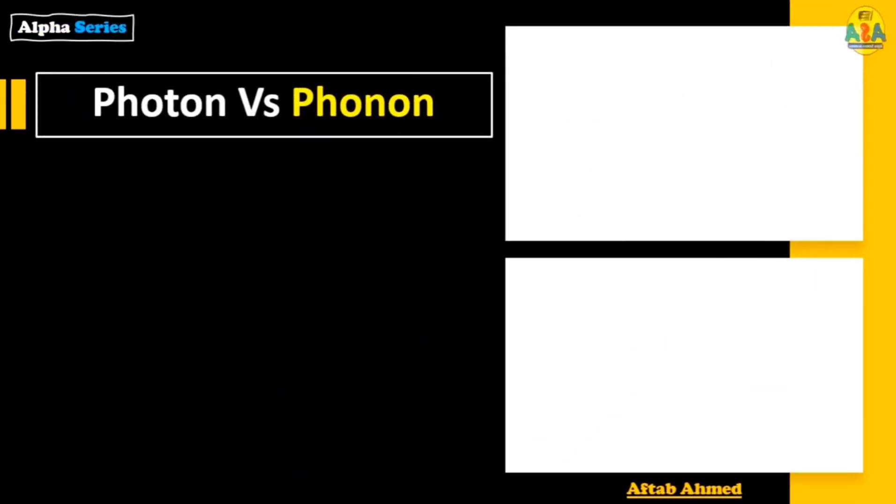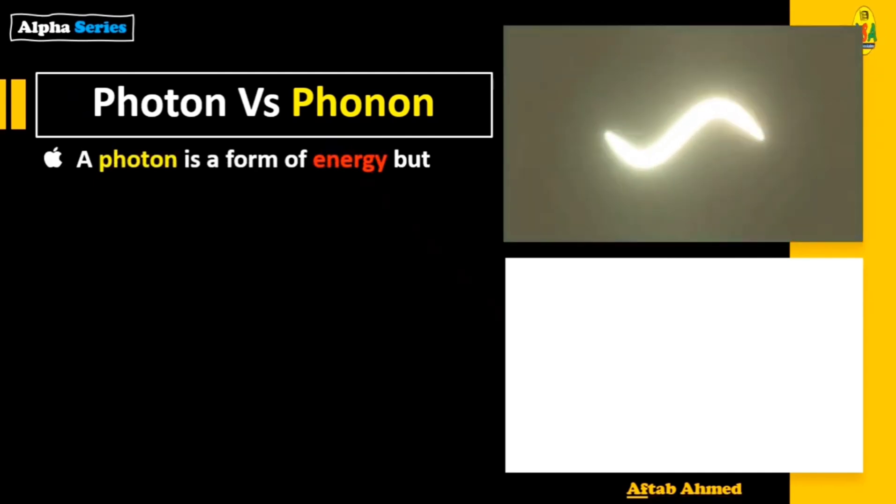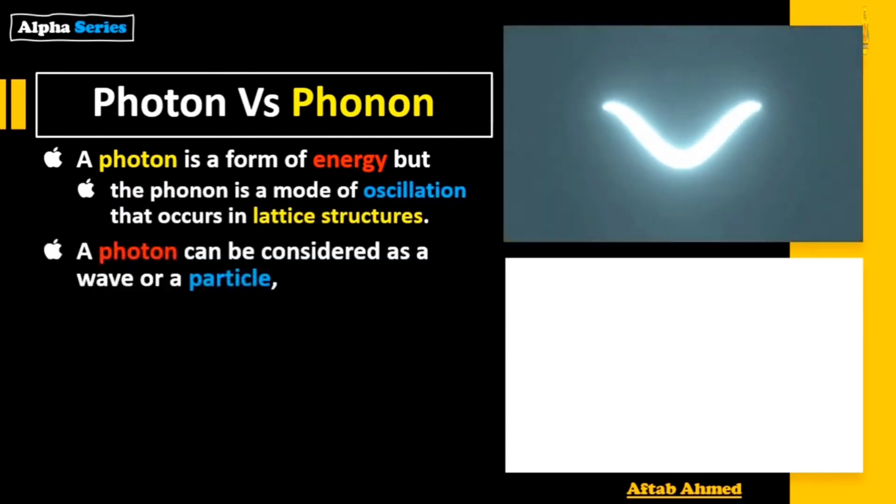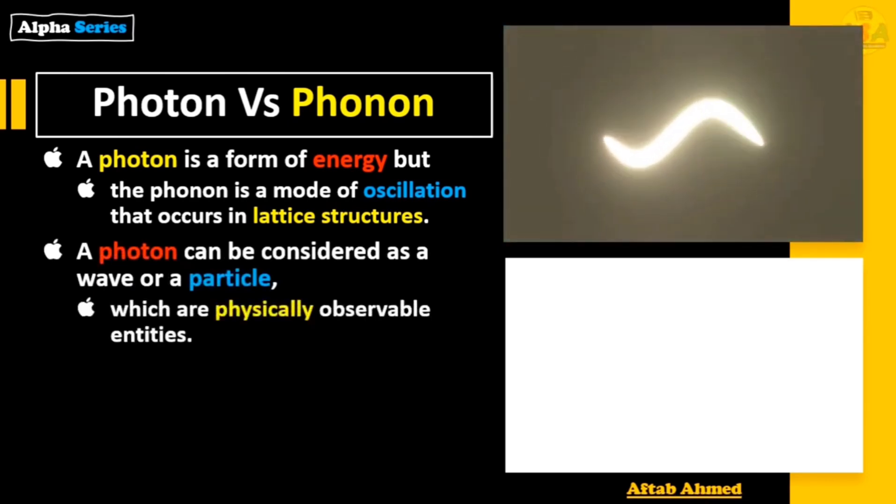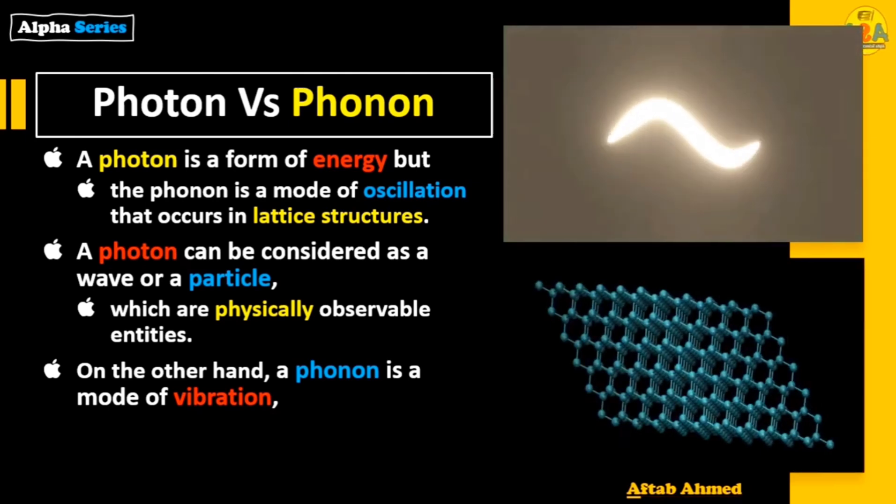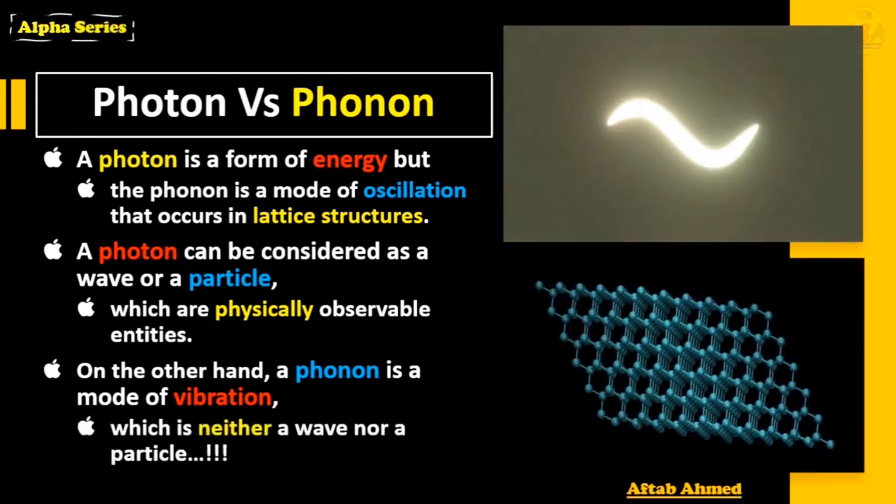Photon versus phonon: a photon is a form of energy but the phonon is a mode of oscillation that occurs in lattice structures. A photon can be considered as a wave or a particle, just like in wave-particle duality, which are physically observable entities. On the other hand, a phonon is a mode of vibration which is neither a wave nor a particle.